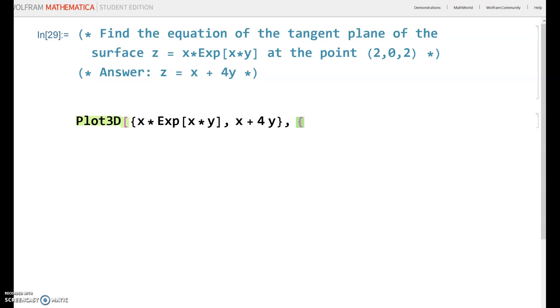And then, for the boundaries for x and y, a little bit of trial and error. I want to at least include the point 2 for my x. So, maybe 1 to 3. Let's see how that works. And then y, I want to include the point 0. So, how about y goes from negative 1 to 1.